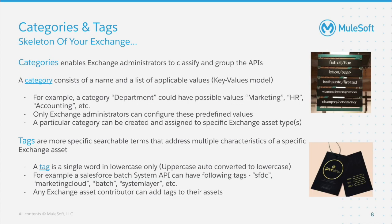So what are Exchange categories and tags? Categories are similar to aisle signs in grocery stores. It enables exchange admins to create classifications of APIs so that API owners can apply categories for API consumers to filter their search. A category entails the name of the category and a list of relevant business values. For example, an API can be categorized based on the department or business unit it belongs to, with values like marketing, HR, accounting, etc.